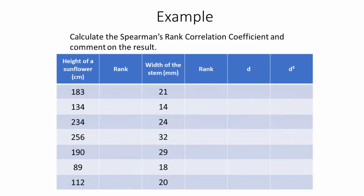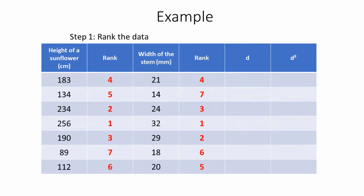Let us look now at how we would calculate the Spearman's rank correlation coefficient using some data. As we can see in this graph, we have height of sunflowers in centimetres and we have the width of the stem. In the first stage, what we need to do is put all of the heights of the sunflower in rank order. The highest will be ranked number one, and the lowest will be ranked number seven in this case.